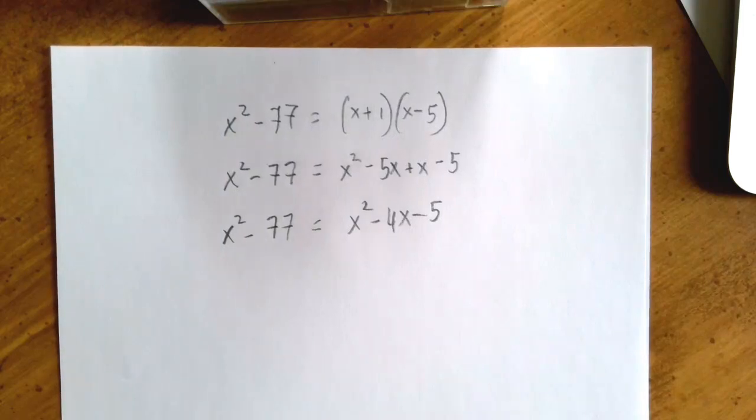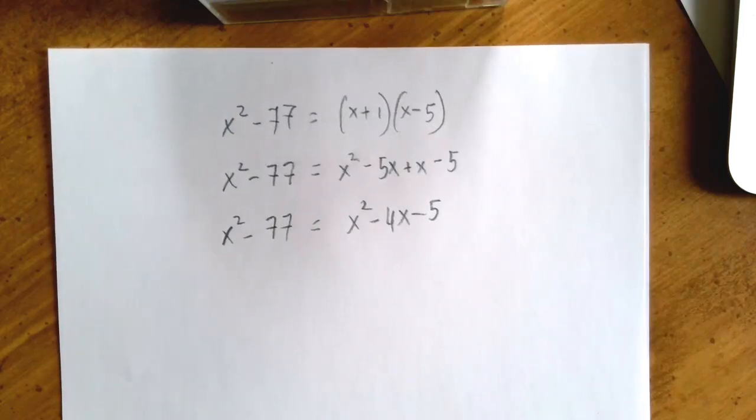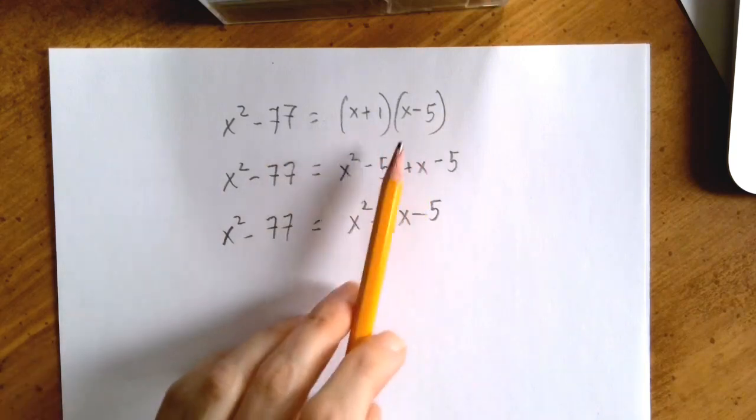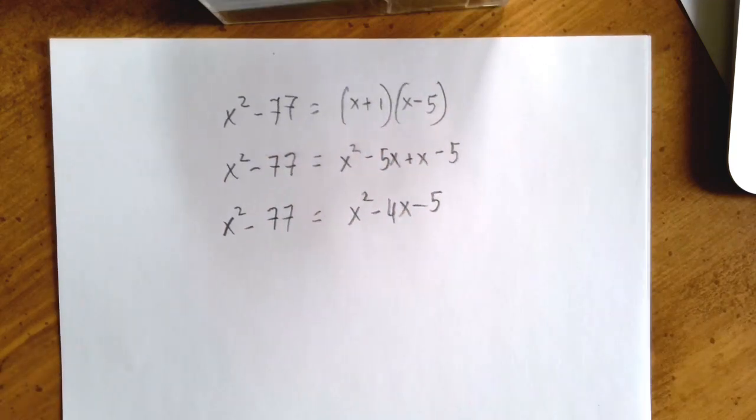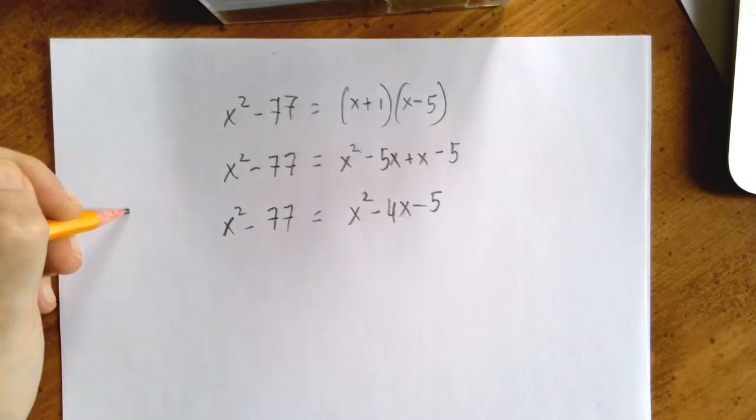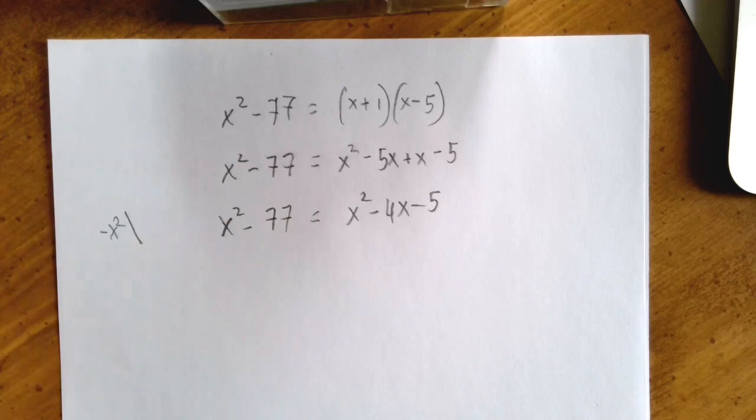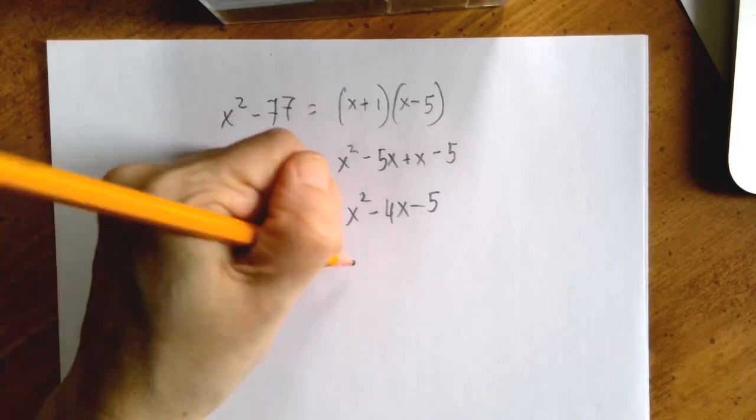And then we combine like terms. Eventually, when you did this a whole lot of time, you're going to be able to go from here to here. And you're just going to say minus 5x plus 1x. You do that mentally. This turned out, after all, not to be a quadratic equation because if we subtract x squared from both sides, the quadratic pieces cancel out.